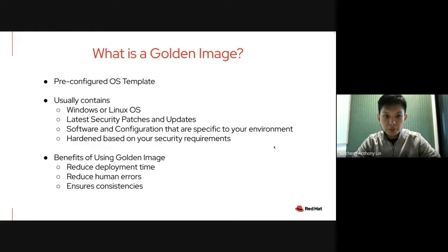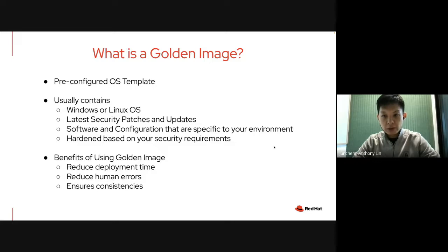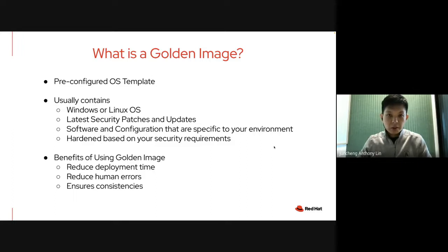A golden image is really a pre-configured OS template. Usually you have things like Windows or Linux OS. If you want to have the latest security patches and updates to the image, and of course to have configurations specific to your environment, and to harden it according to requirements based on the needs of the customers or yourself. The benefits of using a golden image include reducing deployment time. For instance, if you have a VMware template, it's going to be very easy to deploy, and you eliminate potential human errors because it's all done in an automated fashion, and it allows you to be very consistent in deployment.